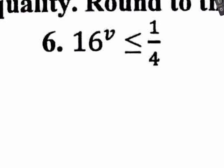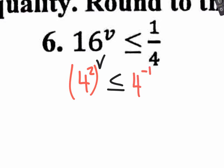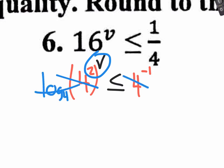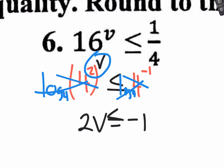Number 16. You could apply logarithms here, or I see the 16 and the 4 and I know I could change them to be the same base. So you might as well do that — it's quicker. I could change the 16 to become 4 squared, still to the v power, less than or equal to, and change the 1/4 to become 4 to the negative 1 power. Then you can apply log base 4 on both sides, which causes the 4s to cancel — but don't forget to multiply power to a power. You're going to end up with the simple inequality 2v is less than or equal to negative 1. Dividing by 2 on both sides gives v is less than or equal to negative 1/2.